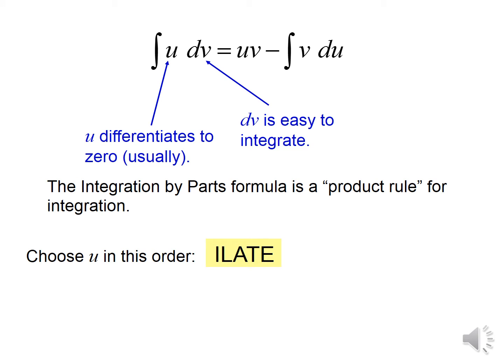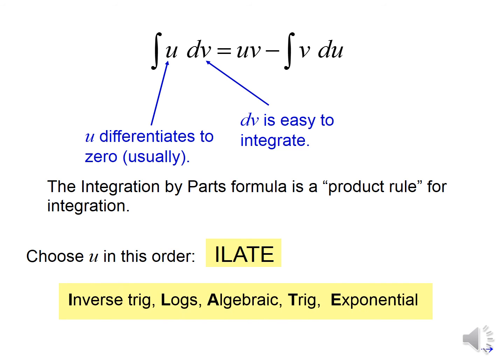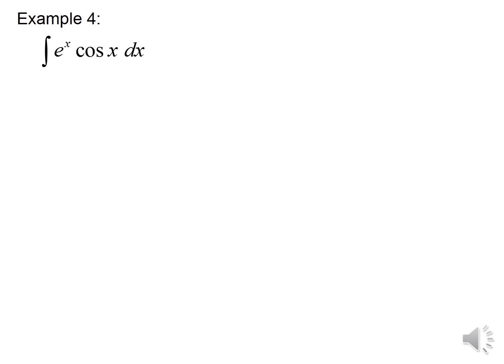In choosing U, you want to use the mnemonic ILATE to help you remember which value to choose. We start by looking at inverse trig, then logs, then algebraic, then trig, or exponential. Remember, this is not a hard and fast rule — it's just a guideline to help you choose U and V. It really doesn't matter which one you choose, but the guidelines make it easier.